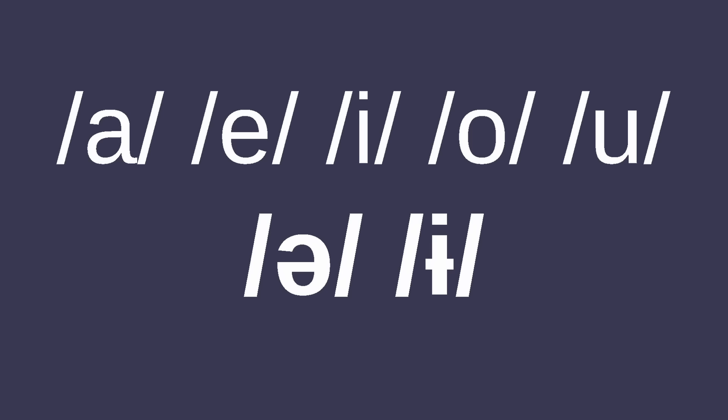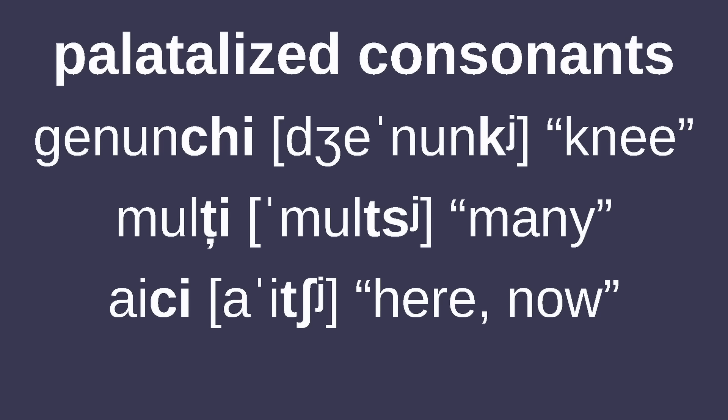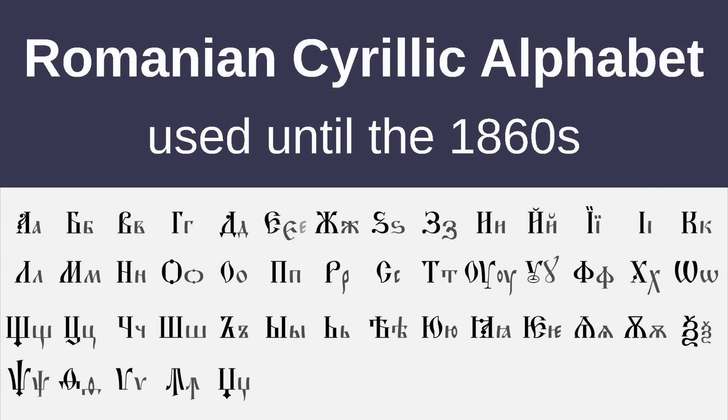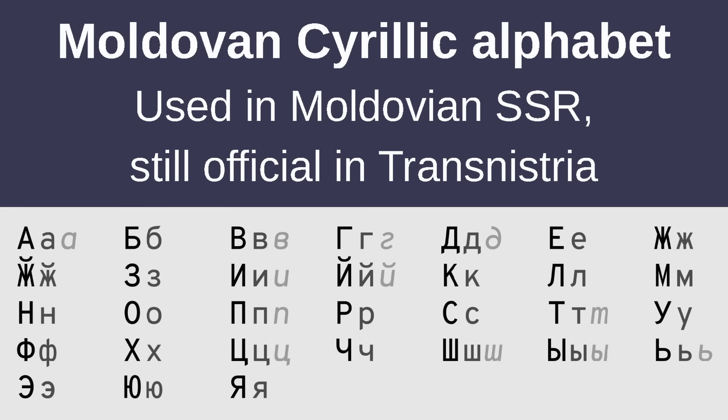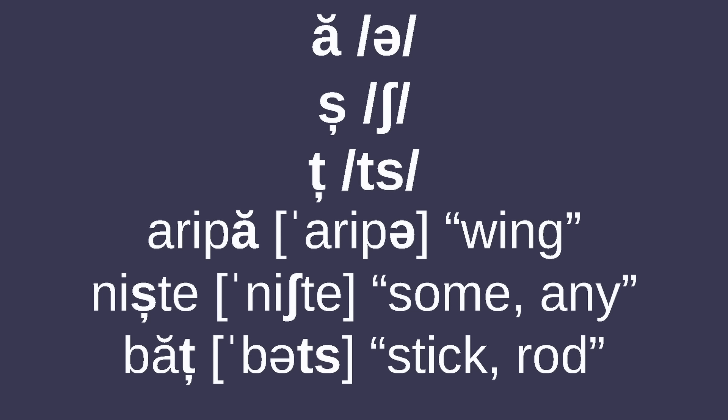Romanian has seven vowels, including schwa, which can be stressed unlike in other Romance languages, and the close central vowel /ɨ/, which is also present in Aromanian. There's also a lot of diphthongs and triphthongs, notably including glides with non-syllabic /e̯/ and /o̯/. Romanian also has an abundance of palatalized consonants, appearing especially at the ends of words. While currently written with the Latin alphabet, Romanian used to be written with the Cyrillic alphabet up until the 1800s, and again in Moldova when it was part of the USSR. Romanian represents /ɨ/ with Î at the beginnings and ends of root words and Â elsewhere. Other Romanian diacritics include Ă with a breve for schwa, and Ș and Ț for /ʃ/ and /ts/ respectively.